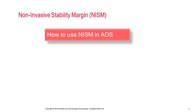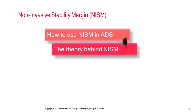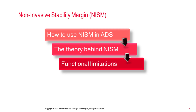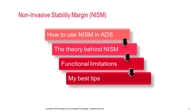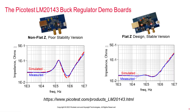In this video, I'm going to show you how to use this Sandler non-invasive stability margin tool, or NISM, in ADS to determine control loop stability. I'll show you a little theory about how NISM works, some functional limitations, and some of my best tips. At the end of the video, I'll show you where to download the workspace and how to install it as a template so you can use it on simulated and measured data to evaluate your own circuits.